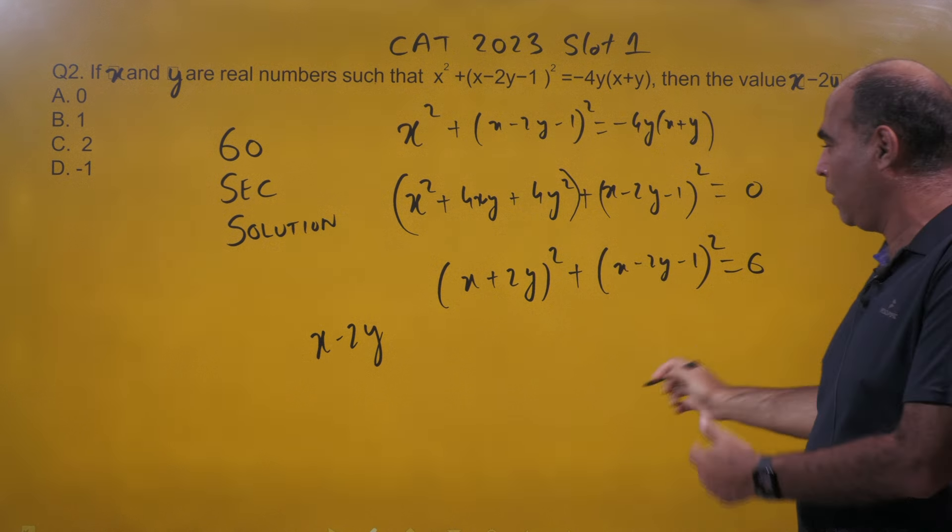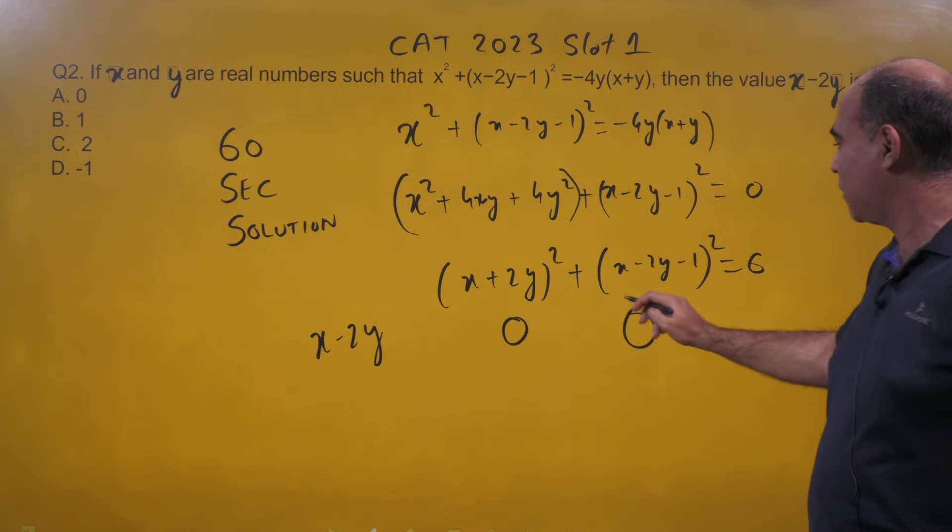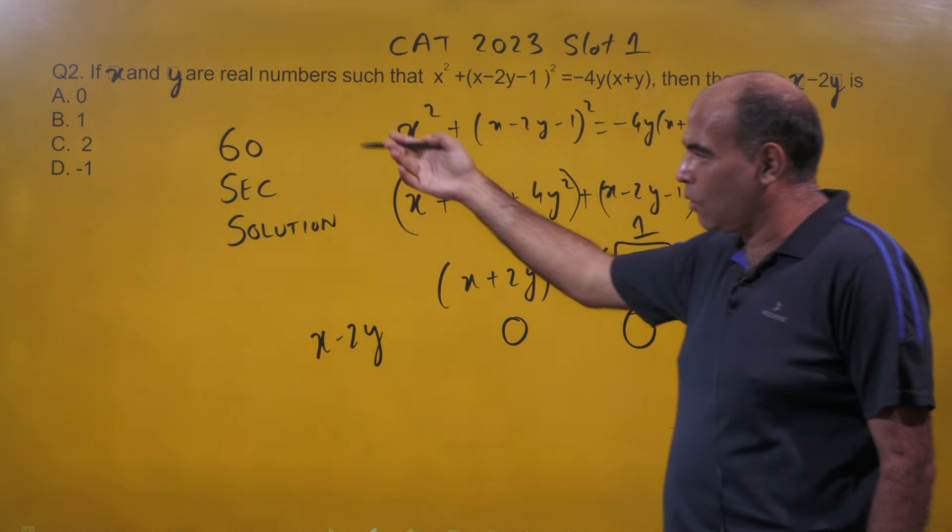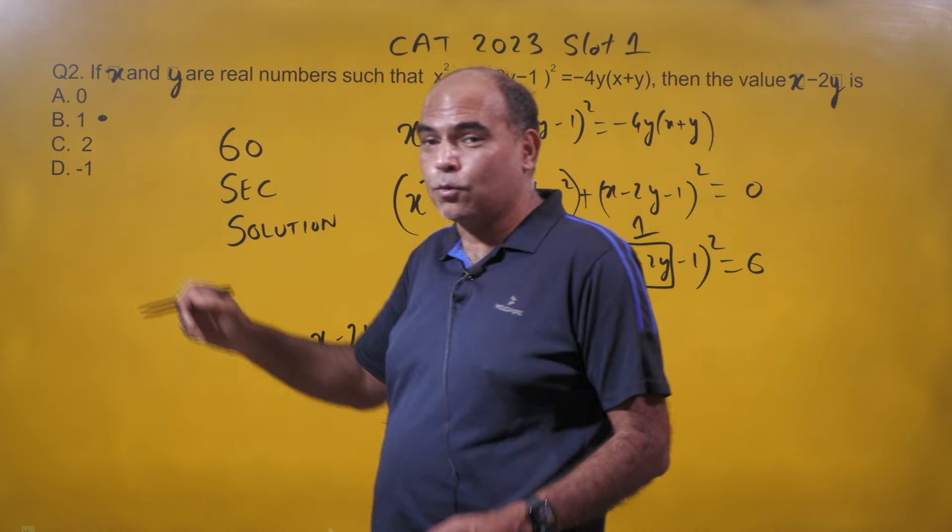A square plus a square becomes 0 only when both of them are zeros, and this becomes 0 only when x - 2y is 1. Hence option B is the right answer, and that's it. You have to do nothing else in this question.